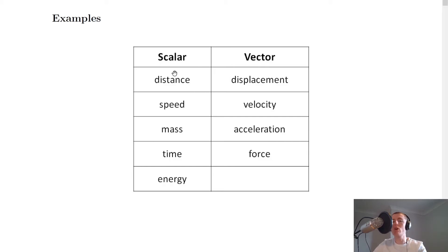So for all these things on the left hand side they only have a size or a magnitude. Whereas all these things on the right hand side have a magnitude and a direction. So we care about direction for these ones but we don't care about direction for these ones.